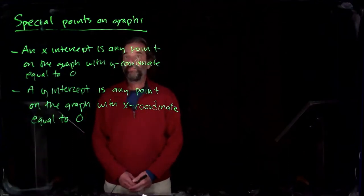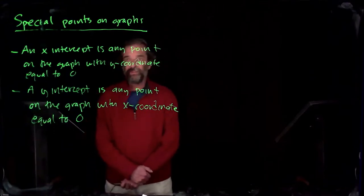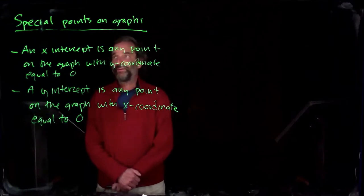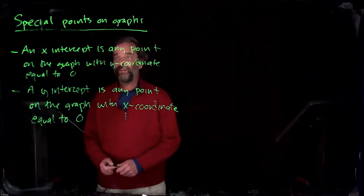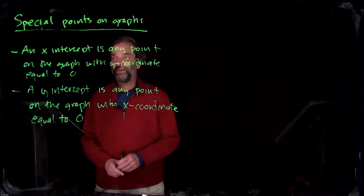So now we're thinking about drawing graphs. Lots of times the first points you might plot are called the intercepts. The x-intercepts and the y-intercepts are places on the graph where one of the coordinates is equal to zero.